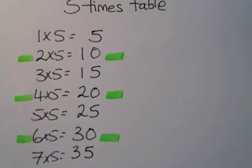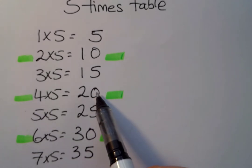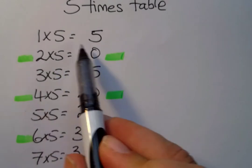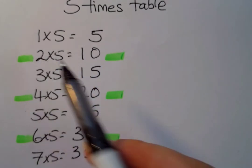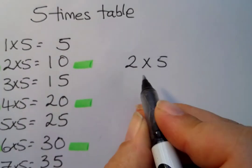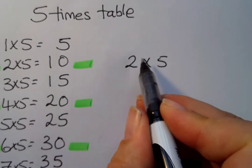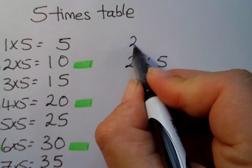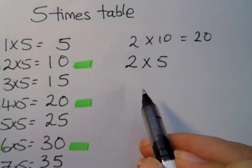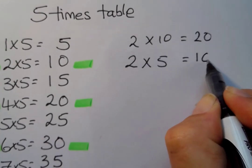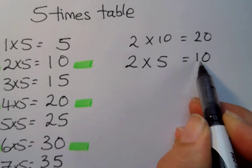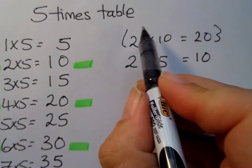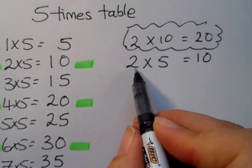The even numbers all end in zero: ten ends in zero, twenty ends in zero, thirty ends in zero. The way we get to the answer with an even number in the five times table is we look at the number — say two — and think: what's half of two? Or think of it as what's half of twenty, because two times ten is twenty. Half of two is one, with a zero at the end — a one in the tens place, zero in the ones place.